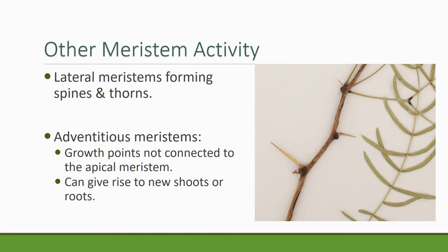There are a few other types of meristematic activity worth mentioning. Sometimes lateral meristems also form spines and thorns on plants — here's an example of just above the bud, you'll see a spine or thorn. Adventitious meristems are ones that are kind of accidental — they are growing points that arise on the root or stem and have no real connection to the apical meristem. So they're not under the control of the apical meristem, they're not true lateral meristems, but they can give rise to new shoots and roots.